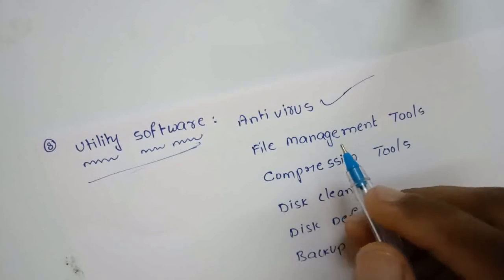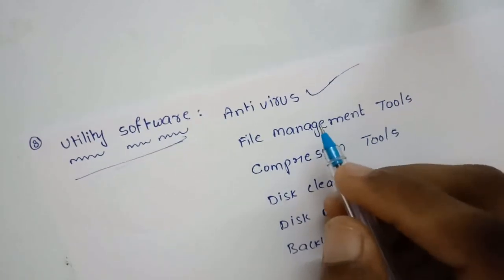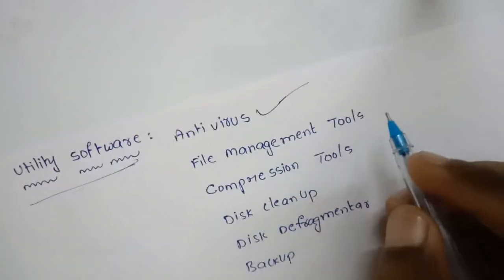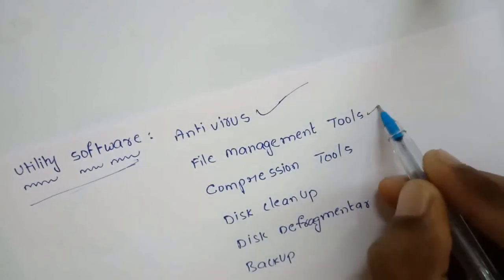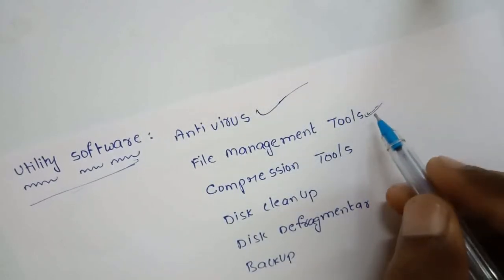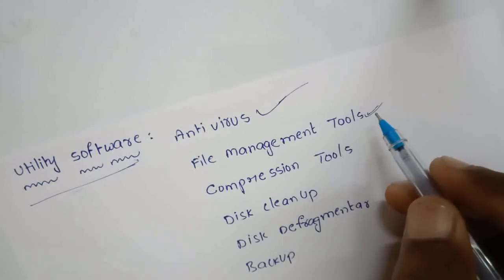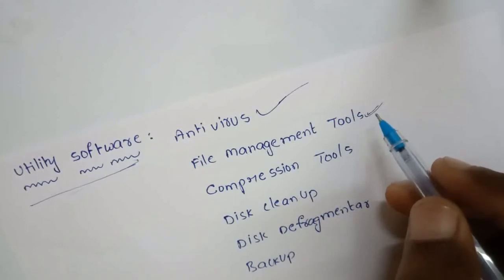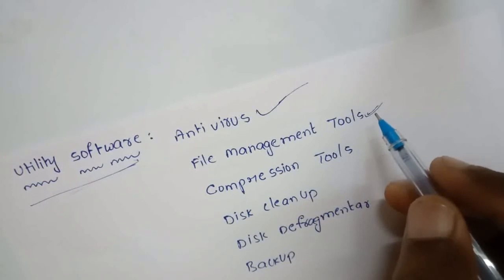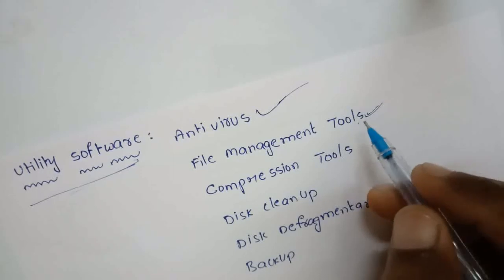Next is file management tools. File management is an important function of operating systems, as all data and instructions are stored in the computer in the form of files. Utility software providing regular file management tasks like browse, search, update, and preview are called file management tools. Windows Explorer, Google Desktop, Directory Opus, and Double Commander are examples of such tools.